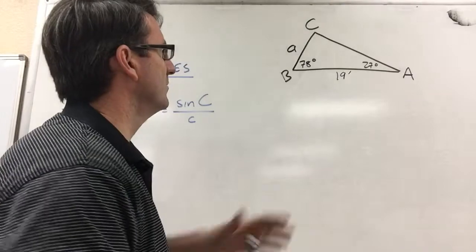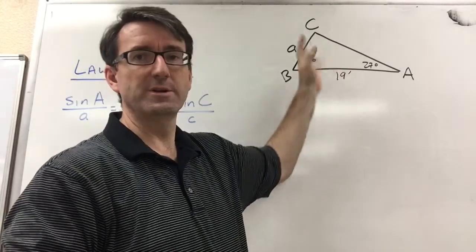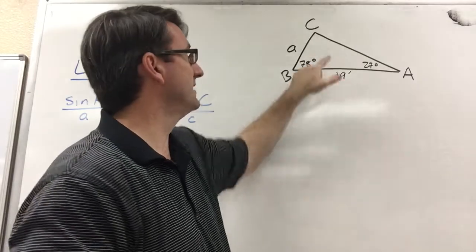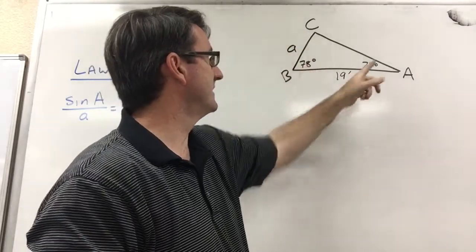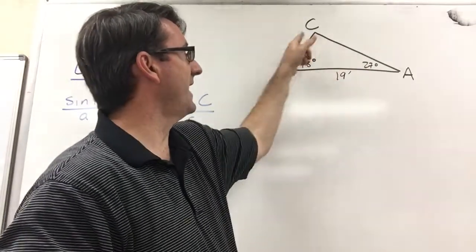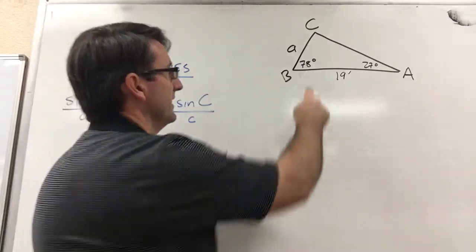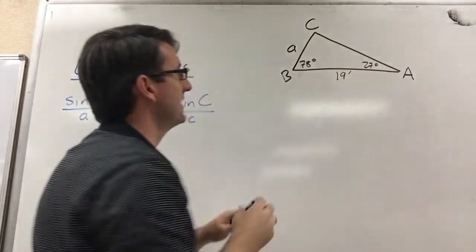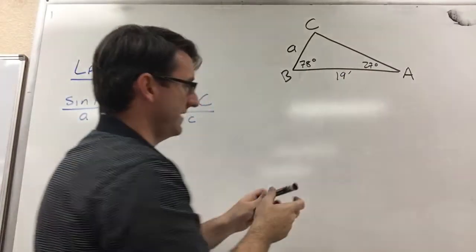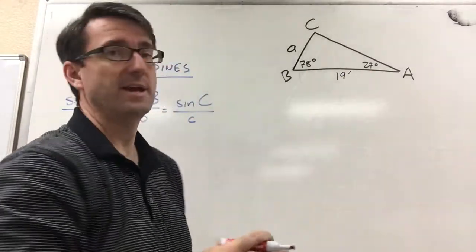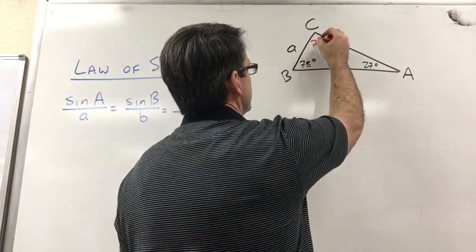So here we know side C. So in order to use the law of sines, we also need to know angle C. And so let's find angle C. The three angles have to add up to 180 degrees. So if we add these two together and subtract from 180, 78 plus 27 is 105 degrees, and 180 minus 105 degrees is 75. So this is 75 degrees.